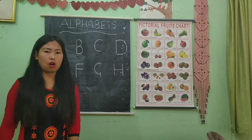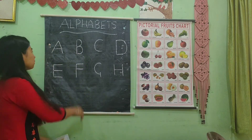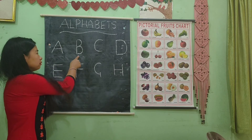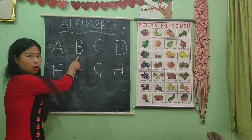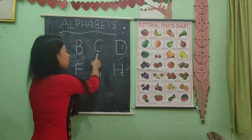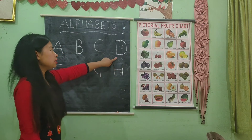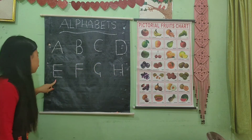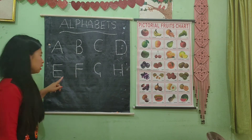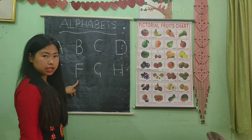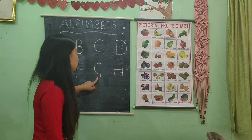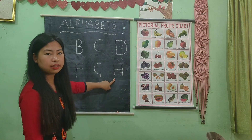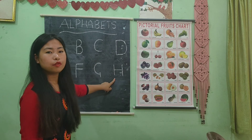Now, recall all alphabets. Okay? A for apple. B for ball. C for cat. D for dog. E for elephant. F for fish. G for grapes. H for hen. Very good.